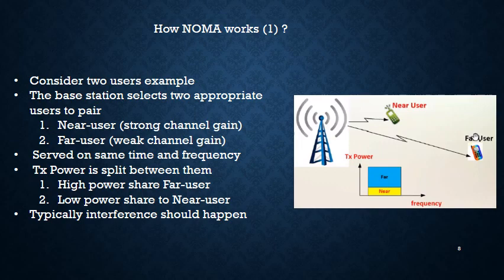Both users are served on the same time and same frequency. The base station allocates low power to the near user and high power to the far user — the transmission power is split between them. This is because higher power is required for the signal to reach the far user, and conversely for the near user.